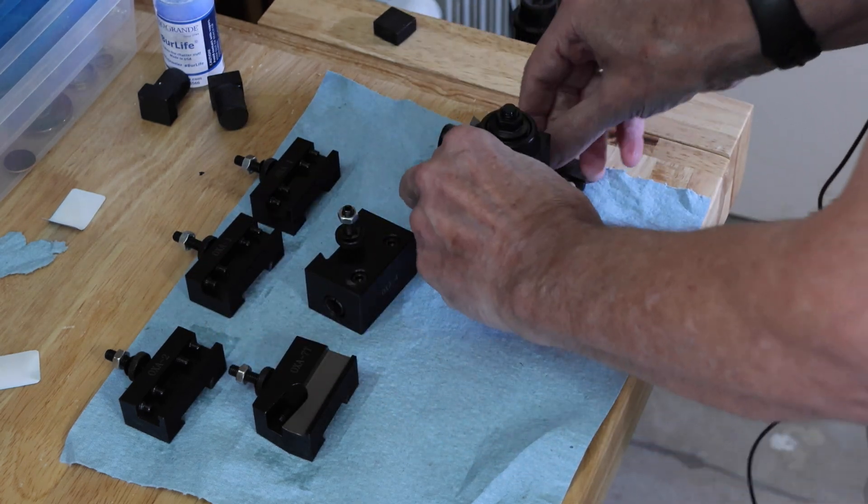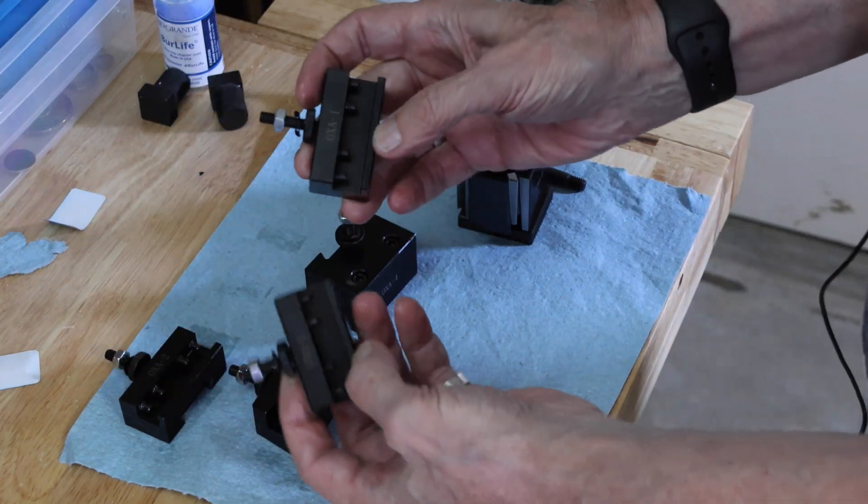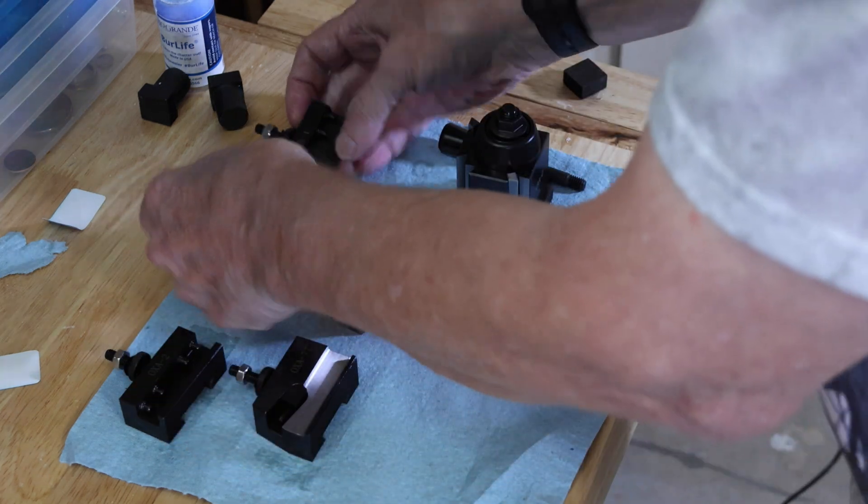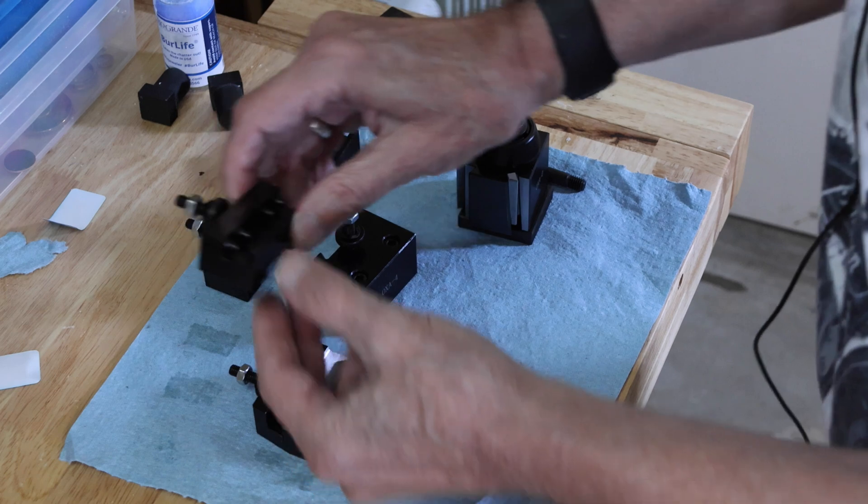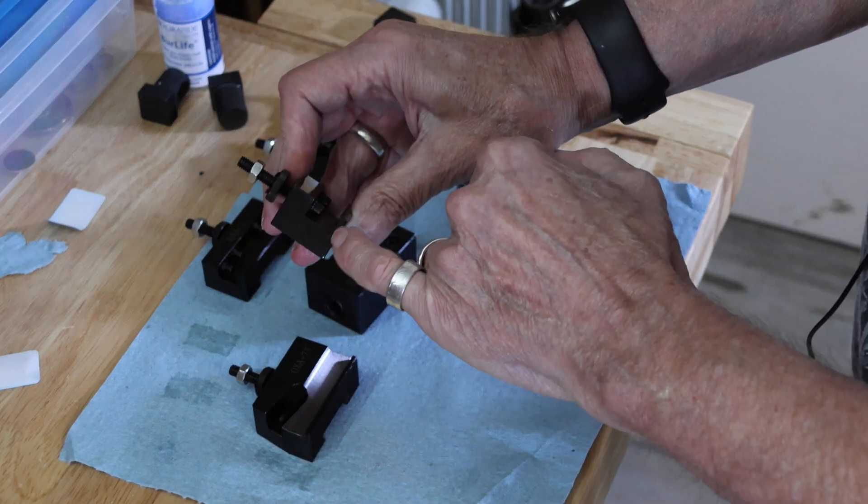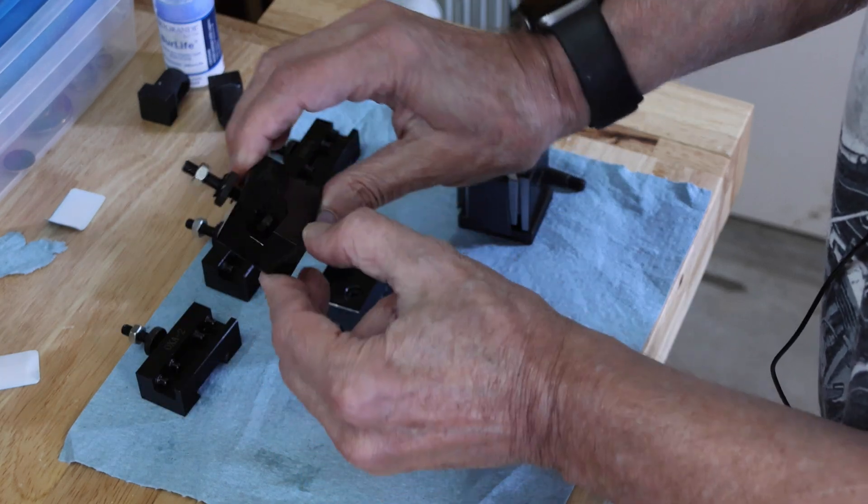Alright so we've got that and we've got two of these holders that are the same. They're for turning tools and facing tools and this one is pretty much the same except it's got a groove in it right here for holding boring bars. Special tool holder for parting tool.